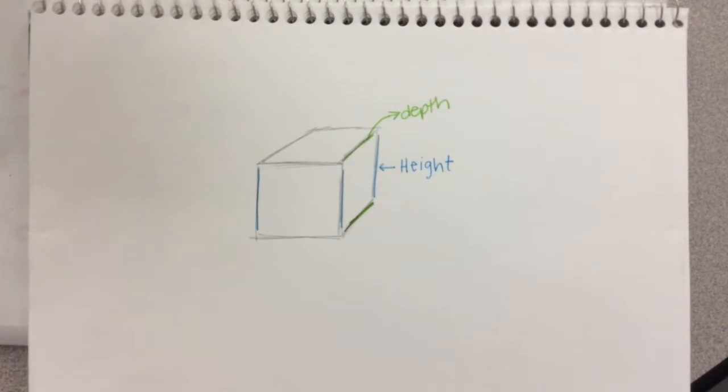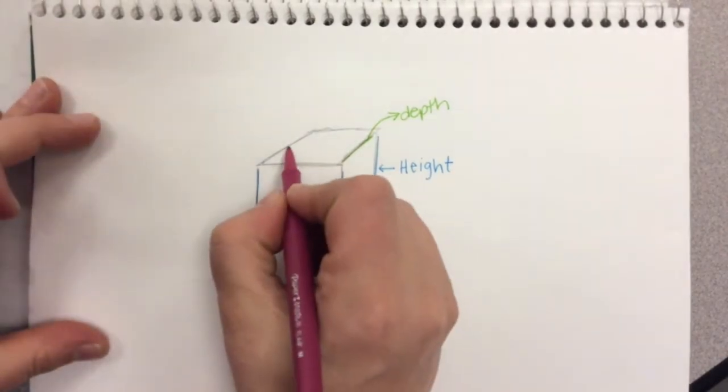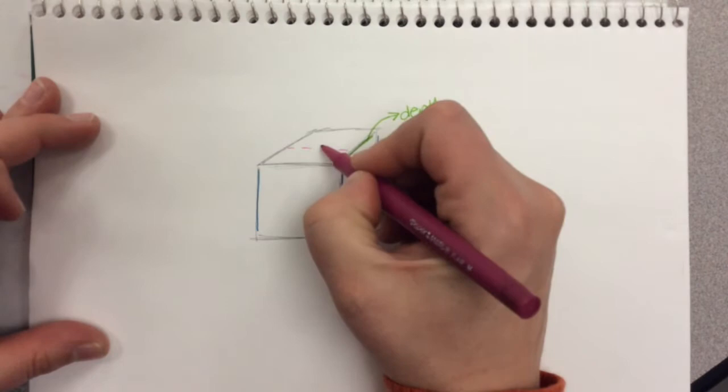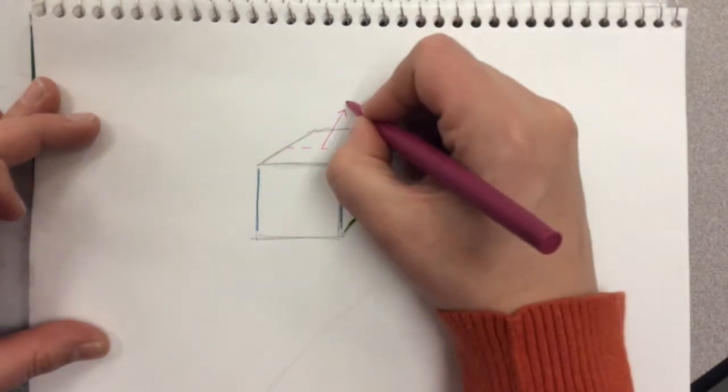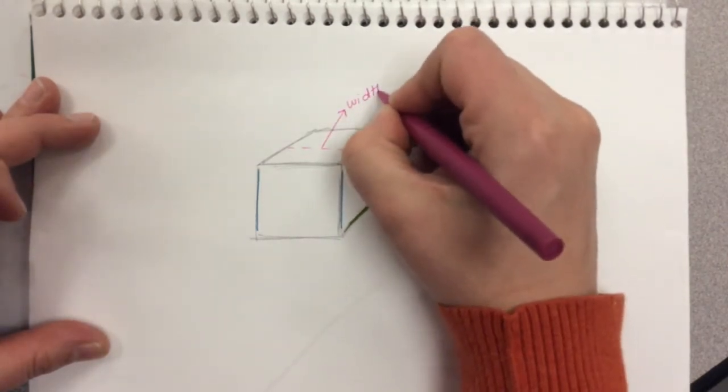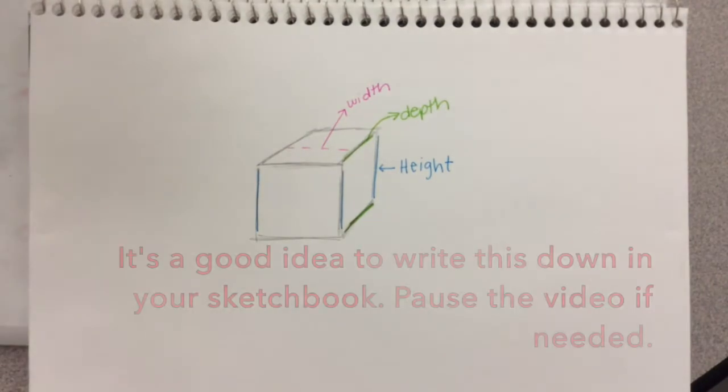And then finally, I'm going to use a pink marker here and draw some dashed lines, which is going to represent the width of our cube. This will come in handy when we're talking about vanishing points.